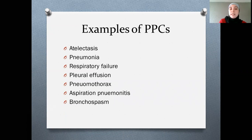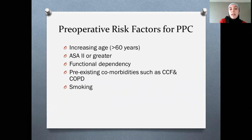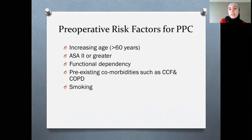There are several patient demographic risk factors for these complications. Having an older population is important, as is an ASA greater than 2. Functional dependency — that is, their functional status pre- and peri-operatively — is also relevant. Existing co-morbidities matter most importantly congestive cardiac failure and COPD. Smoking is also a very important risk factor, with smokers at higher risk for post-operative pulmonary complications.